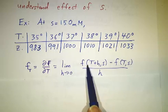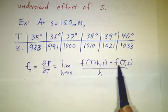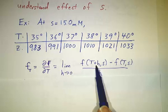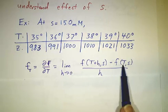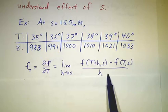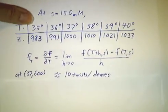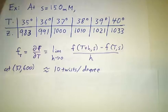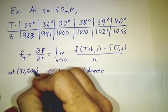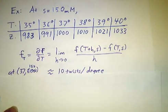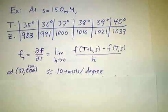We take f at one value of temperature minus f at a nearby value of temperature. See how f changes as you change the temperature and divide by the amount that you've changed the temperature. Then if you want the exact answer, you have to take a limit. And you can see that at 37 and at 150 millimolar, you get about 10 twists per degree.